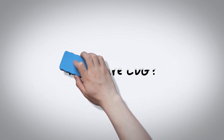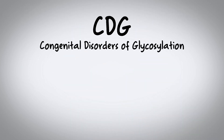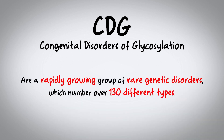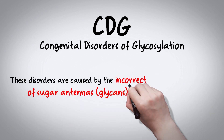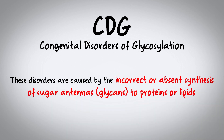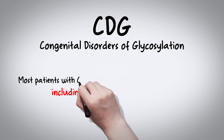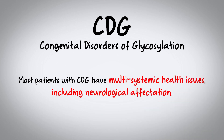What are CDG? Congenital disorders of glycosylation, also known as CDG, are a rapidly growing group of rare genetic disorders which number over 130 different types. These disorders are caused by the incorrect or lack of synthesis of sugar antennas, also known as glycans, for proteins or lipids. Most patients with CDG have multi-system health issues, including affecting the neurological system.